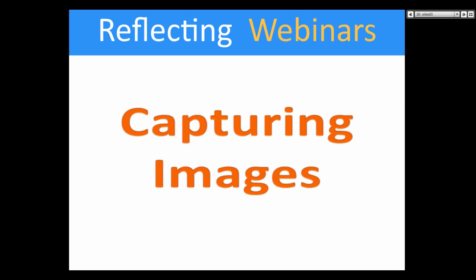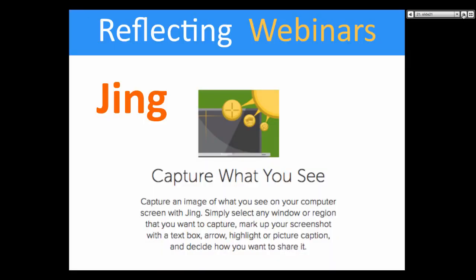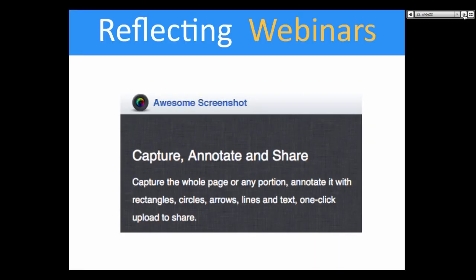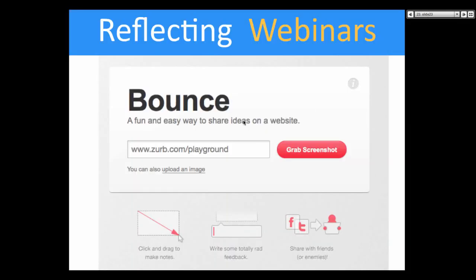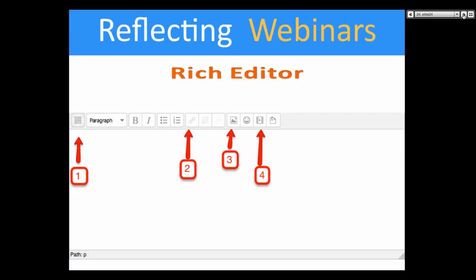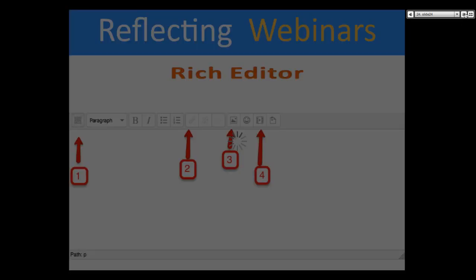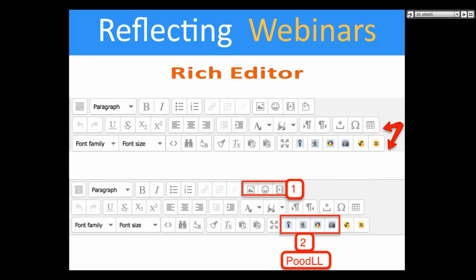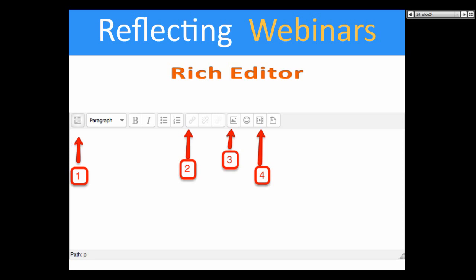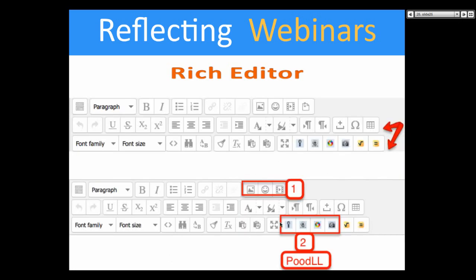What's important here is capturing images — this is how you can communicate with your students and with us. If you're having problems or want your students to explain where a problem is, ask them to capture the image and then through Jing you can add arrows. Awesome also does this. You can also use Snagit, which costs money. We also mentioned the rich editor that has three rows, but you need to open it to get all three rows.